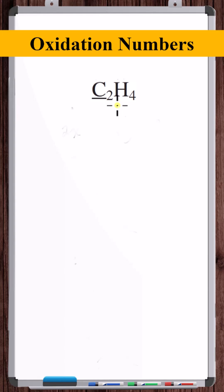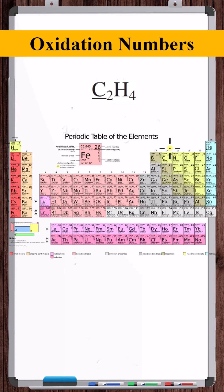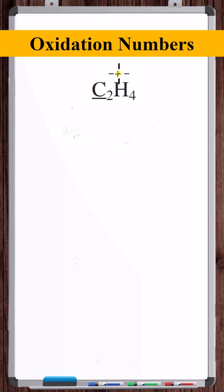If hydrogen is bonded to a metal, its oxidation number is minus 1; a non-metal, plus 1. Carbon is a non-metal, so the oxidation number of hydrogen is plus 1.